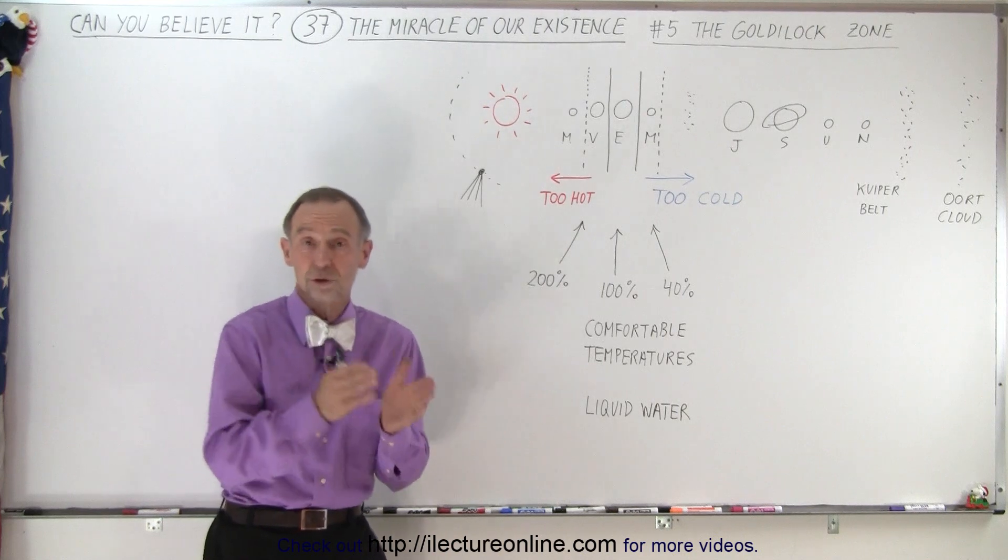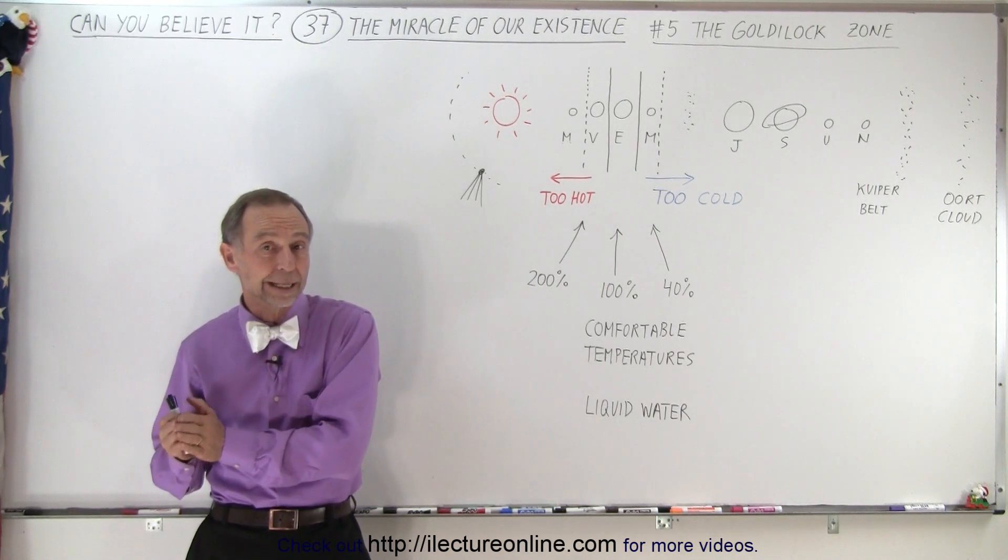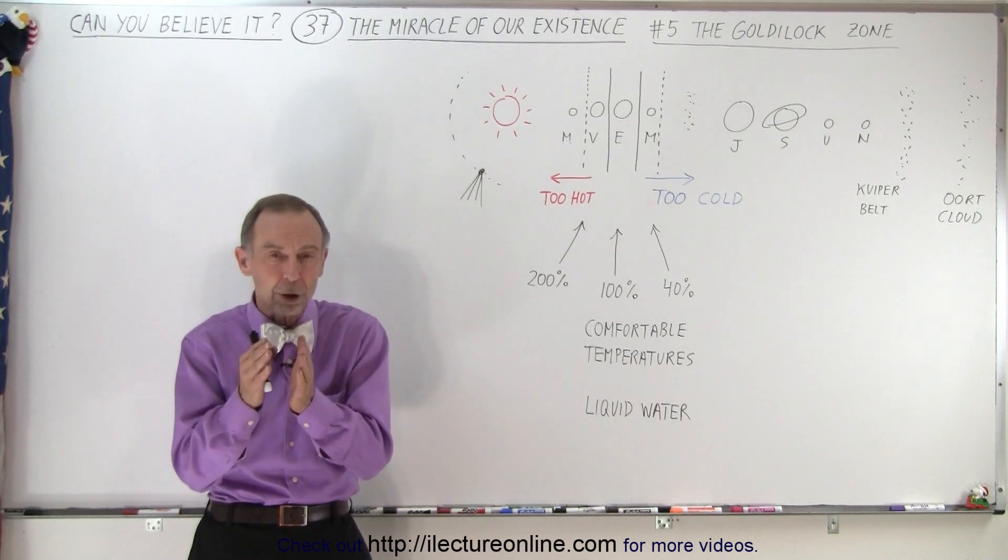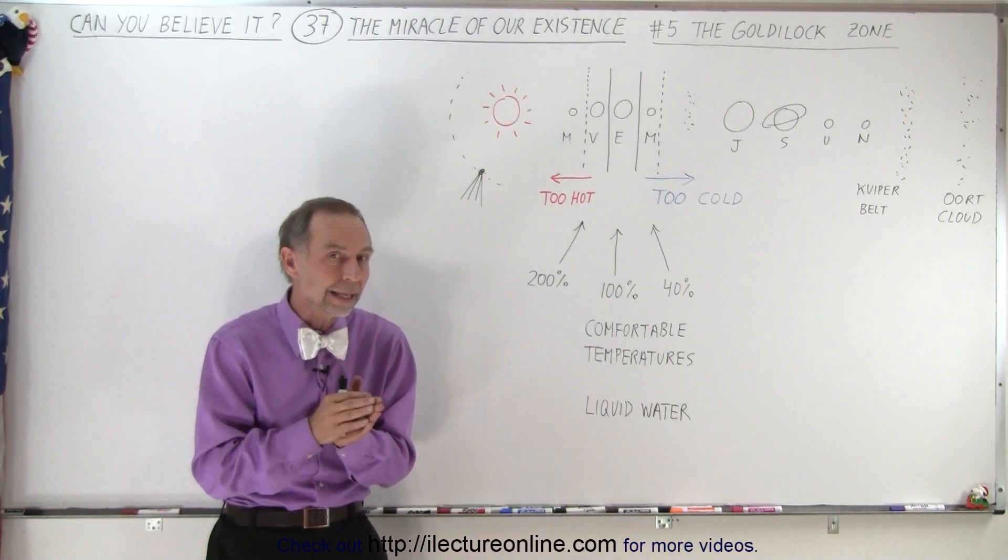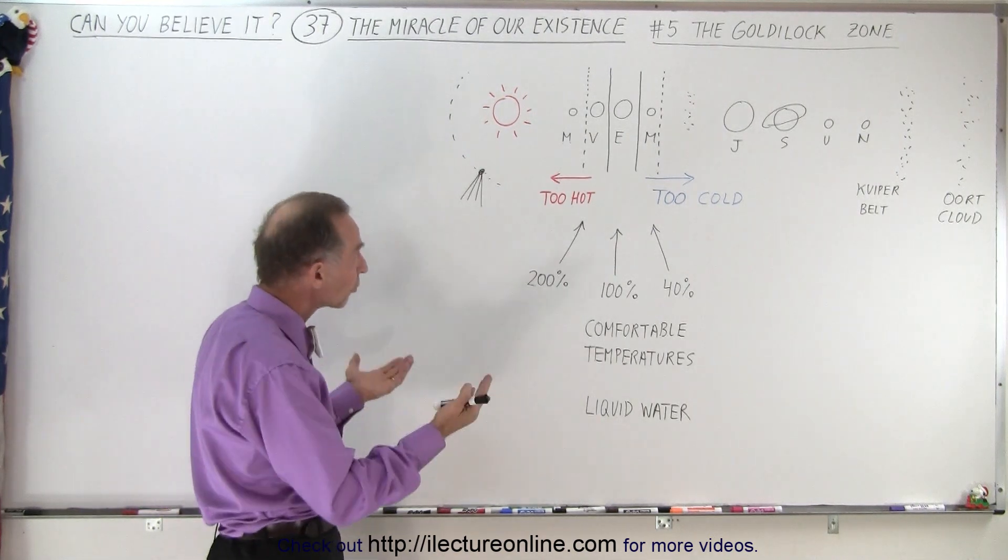Because if you're too close to the star, it's too hot. If you're too far away from the star, then it's too cold. You need to be in what we call the Goldilocks zone, not too hot and not too cold. And so it turns out when we look at our own solar system,